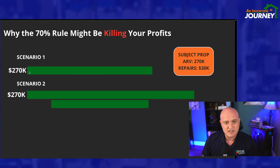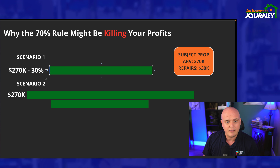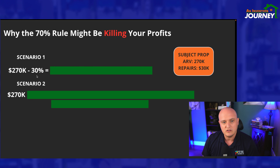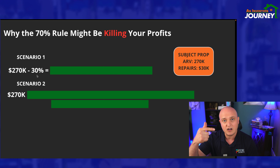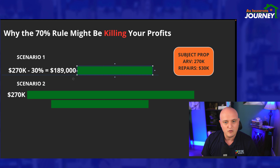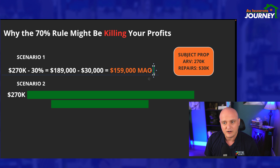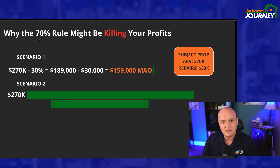In this scenario, the ARV is $270K — remember, this works for $250K and above. We're going to subtract 30%. In that 30%, the reason you do that is because you have your profit margin and your closing costs and all those extra fees associated with closing a deal. That's why it's a good rule of thumb. So removing those numbers gives you an offer price of $189K. Now subtract the $30,000 in repairs, and that gives you a maximum allowable offer of $159,000.